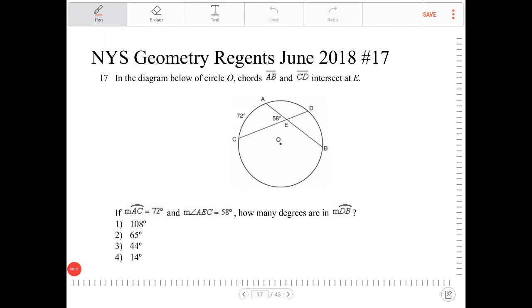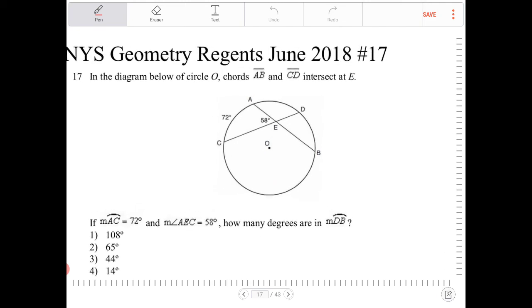In the diagram below of circle O, chords AB and CD intersect at E. If arc AC is 72 degrees and angle EAC is 58 degrees, how many degrees are in measure arc DB?